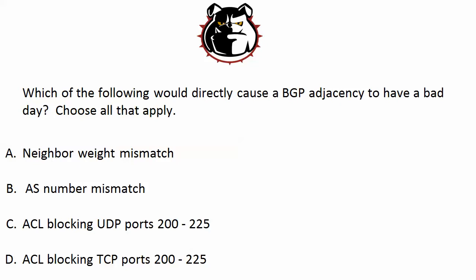Let's check out answers A through D. Neighbor weight mismatch — there's really no such thing in our neighbor statements. We don't have to worry about weights matching. We do have to be concerned about an AS number mismatch. If our neighbor statements are declaring one AS and the neighbor is in another one, that is going to force an adjacency to either go down or just never exist in the first place. Now watch C and D — while these ACLs could definitely cause issues, neither one of them is going to cause problems directly with BGP. Because what's the port number for BGP? Got to know this one in our sleep: TCP port 179.